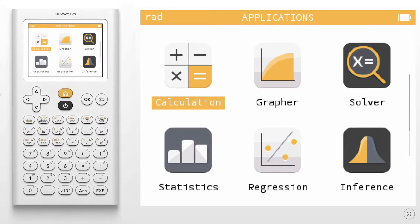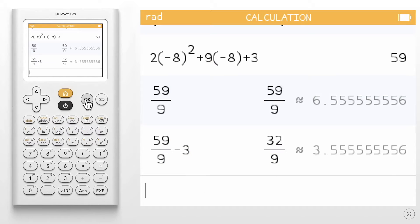Today we are going to learn how to clear the calculation history on the NumWorks graphing calculator. To begin, open the calculation application. You'll notice that I have already performed some calculations here.